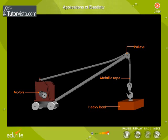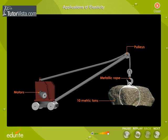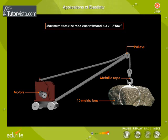The required diameter of the rope is decided by the elastic limit of the material of the rope and the load to be lifted. Suppose the rope is made of steel and the crane has to lift a load of 10 metric tons, i.e., 10^4 kg. The stress corresponding to the elastic limit of steel is 3×10^8 N/m^-2.